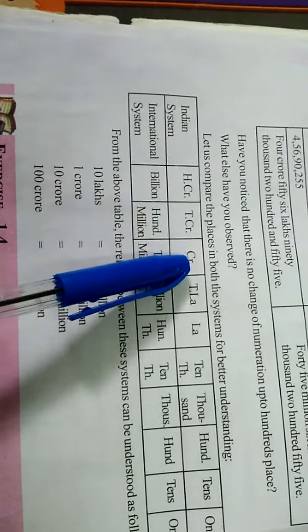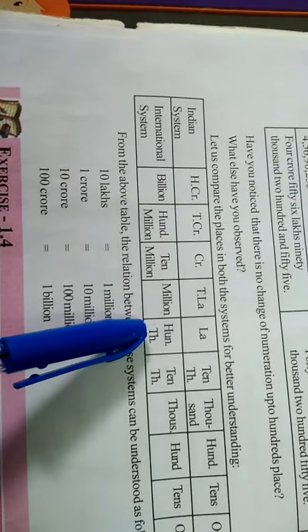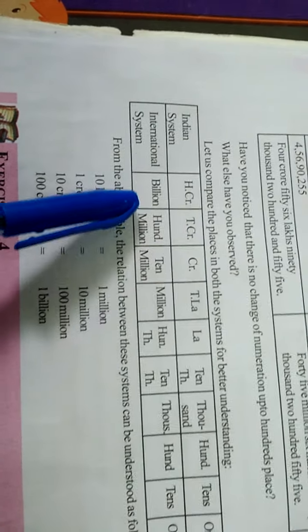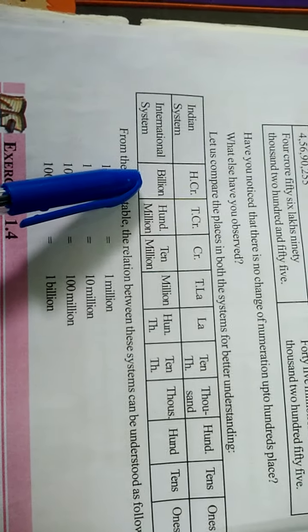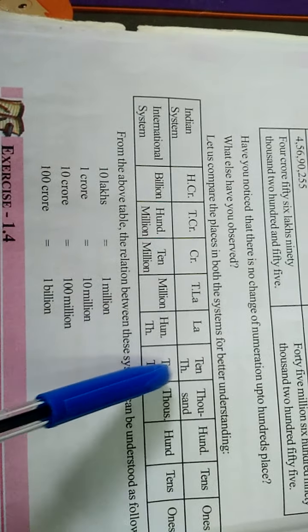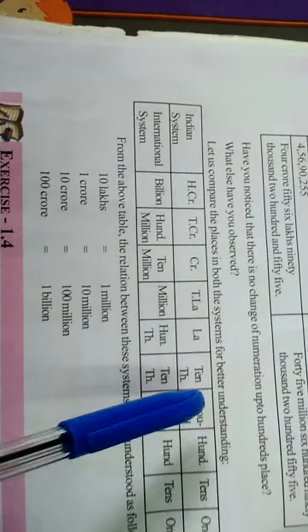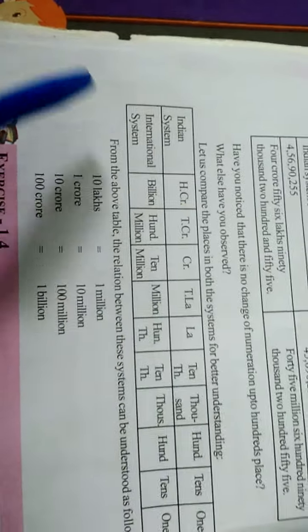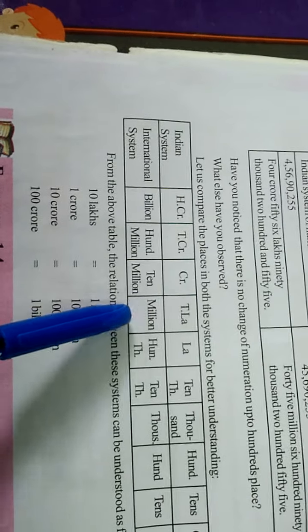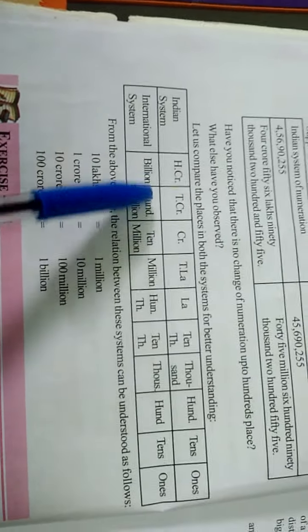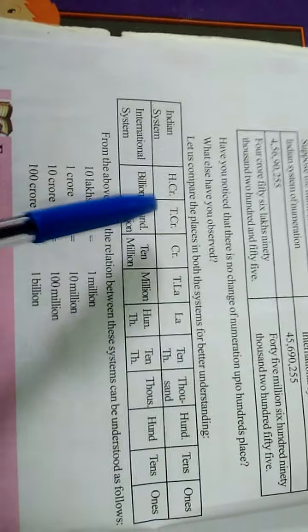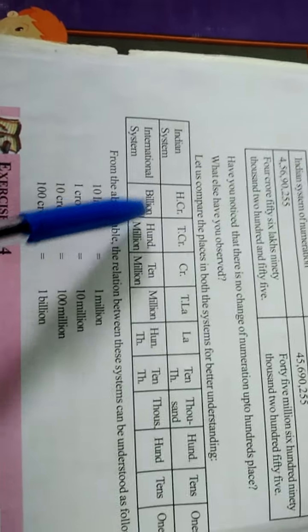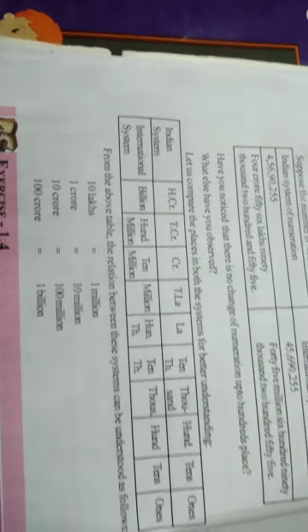After ten thousand, the Indian system has the lakhs period and crores period. In the International system, after ten thousand we have hundred thousands, then millions — the millions period contains millions, ten millions, and hundred millions. Next is the billion period. The tenth place in the Indian system is hundred crores, and the tenth place in the International system is billion.